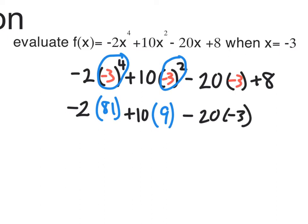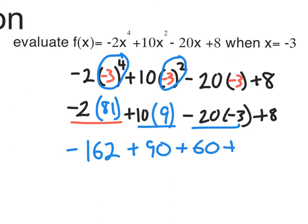Then the minus 20 times negative 3, and then plus 8 at the very end. So 2 times 81 is negative 162, and then we have plus 90. Then we have this multiplication over here which is plus 60, and then plus 8.